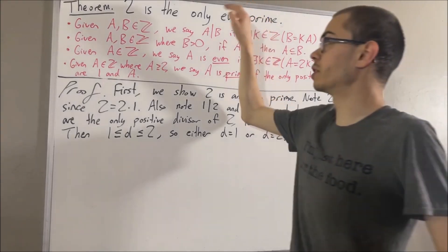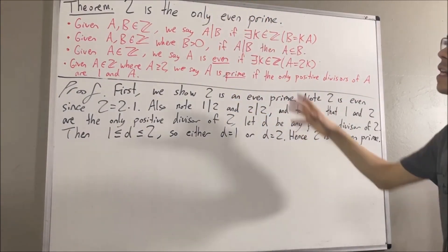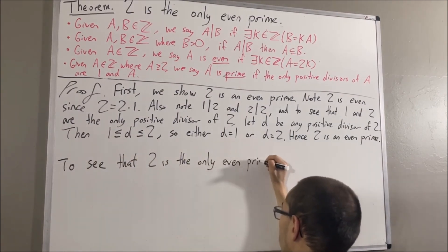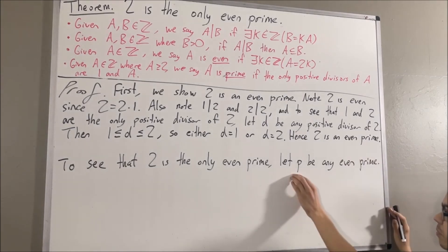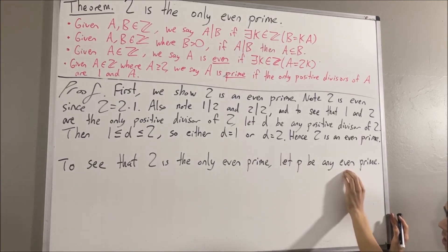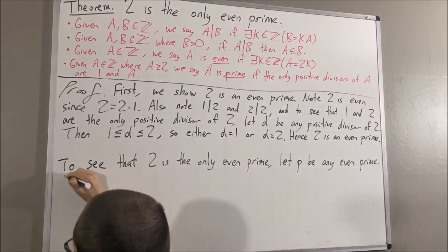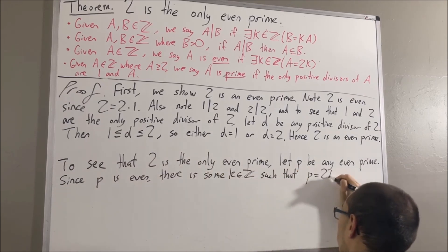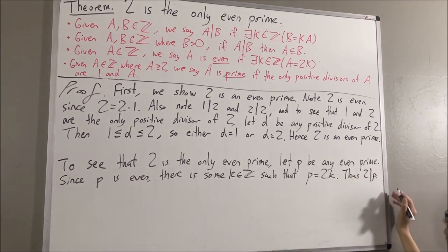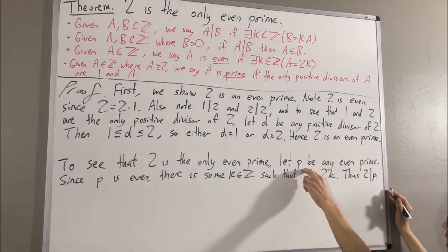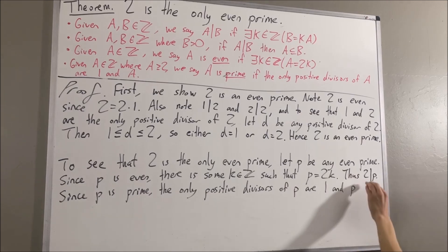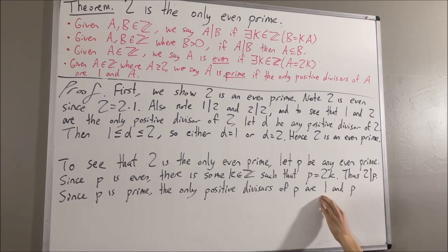But now we want to show that 2 is the only even prime. To do that, we're going to give ourselves an arbitrary even prime and show that it must be equal to 2. So let p be any even prime. Our goal is to show that p must then be equal to 2. Well, since p is even, this means that there is some integer k such that p is equal to 2k. But since p is equal to 2k, this tells us that 2 is a divisor of p. However, since p is prime, we know that the only positive divisors of p are 1 and p. And since 2 is a positive divisor of p, it follows that either 2 is equal to 1 or 2 is equal to p.